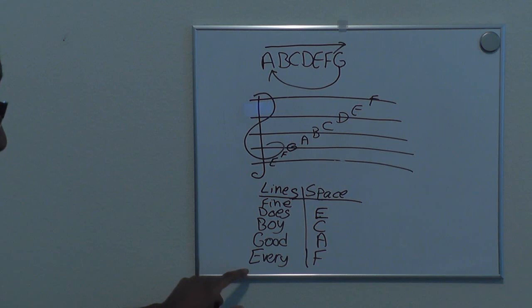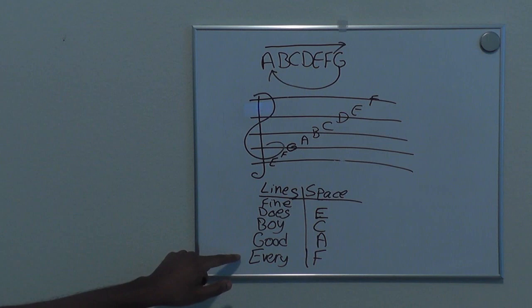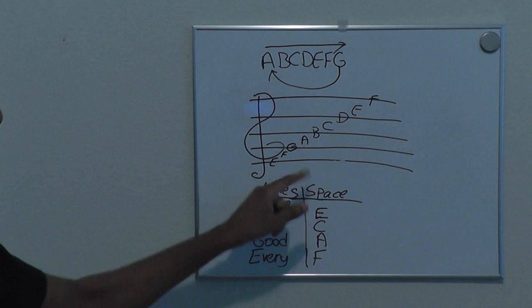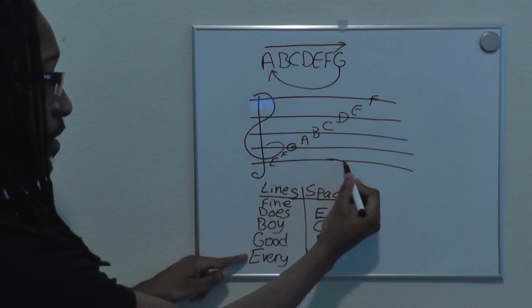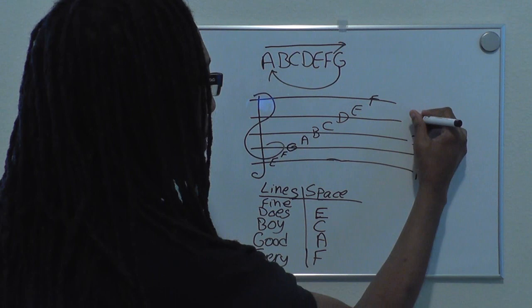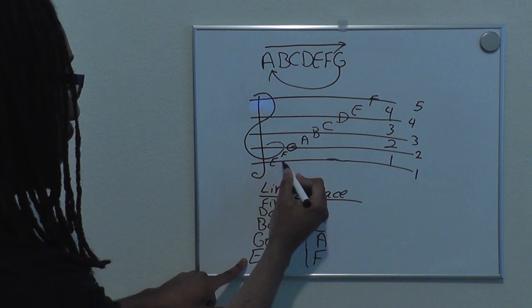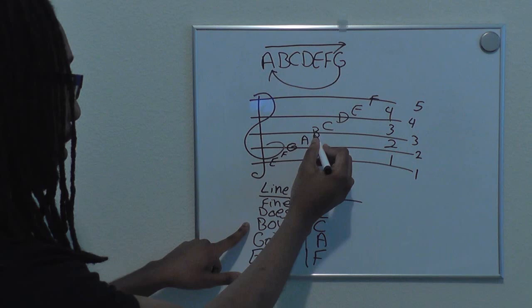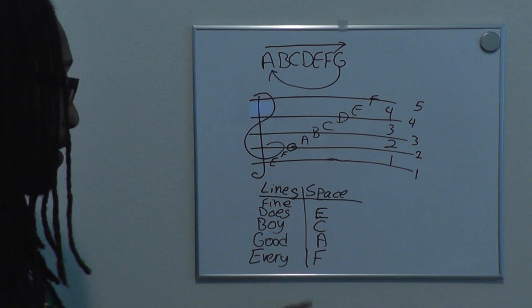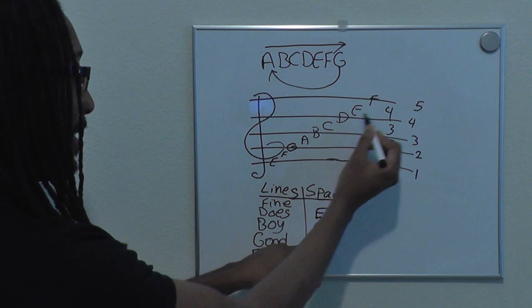With all of this it's easy to figure out what the lines and spaces are. I label them from bottom to top — that's how I count them. So the first line is at the bottom: line one, two, three, four, five. And the spaces: space one, two, three, four. The first line is E, line two is G, line three is B, line four is D, line five is F. Space one is F, space two is A, space three is C, and space four is E.